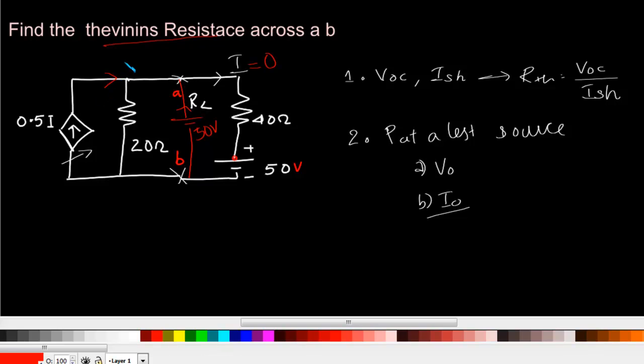The current coming here will also be 0. Now what we have is a 50 volt source with a 20 ohm resistance, which means the entire current will be flowing through 20 ohm. That means the current I caused by the test source or in this direction will be equal to 50 by 20 ohm.